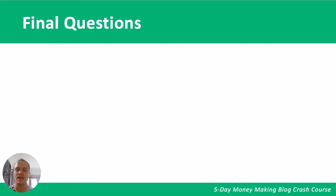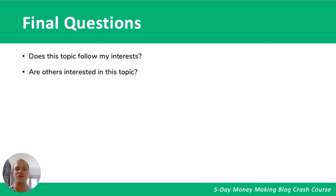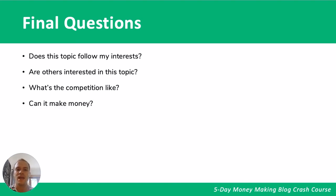Now that we've walked through those four steps, let's ask ourselves some final questions before deciding on our niche. Does this topic follow my interests? Are others interested in this topic — does it have a high enough search volume? What's the competition like, and can we stand out by being unique? Or maybe the competition is low and the search volume is high, which is ultimately what we want. And can it make money? Most niches these days can, but do some research on affiliate programs related to your blog just to confirm your blog can make money.